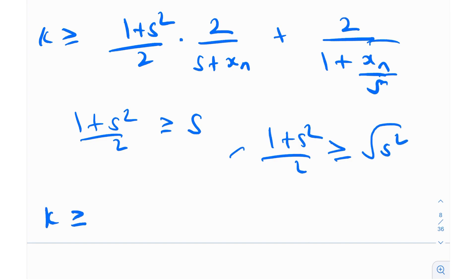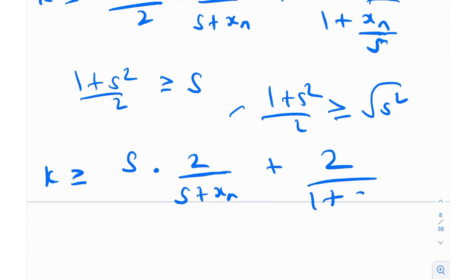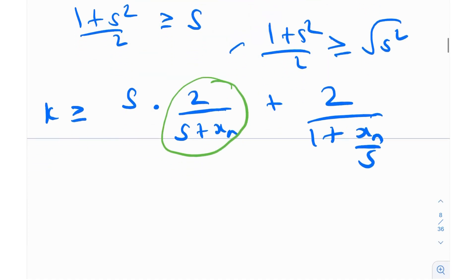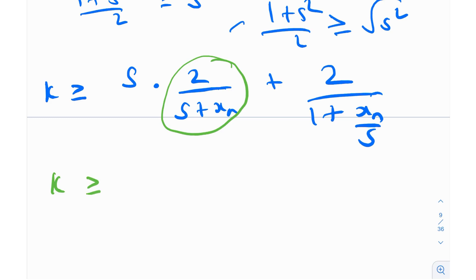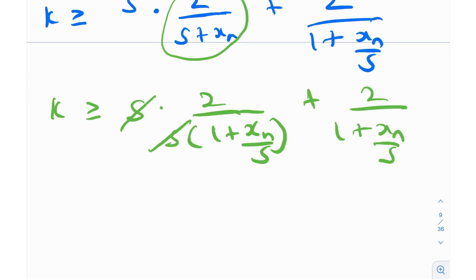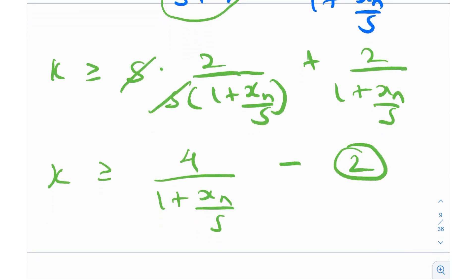So k is essentially greater than or equal to s · 2 / (s + xn), and with the 2 from AM-GM and dividing numerator and denominator by s we get 1 + xn/s. Doing something similar, s factors out to give s · 2 / (s(1 + xn/s)), and this simplifies — leaving k ≥ 4 / (1 + xn/s). I'll label that as result number 2.